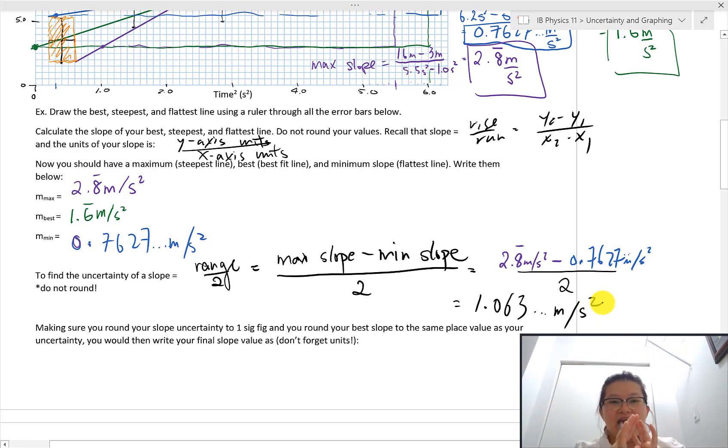So now I have everything I need to finally write my slope and its slope uncertainty at the very end. So I'm going to quickly check. This uncertainty here is definitely bigger than, much bigger in fact, than one percent. It's bigger than 2% of my actual slope value. So I only need to round it to one significant figure.